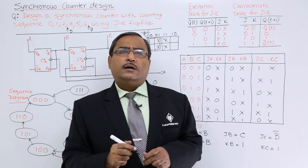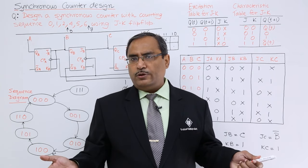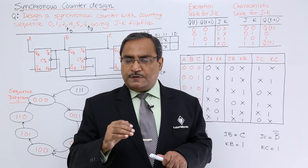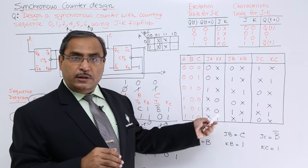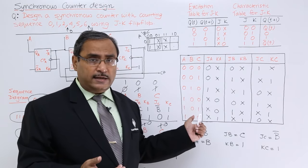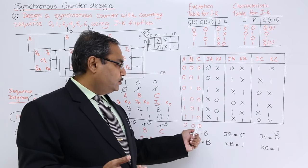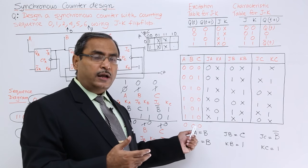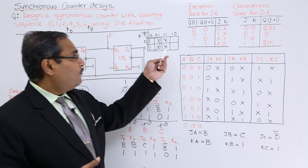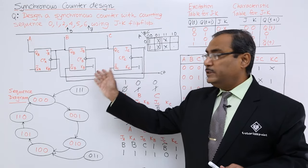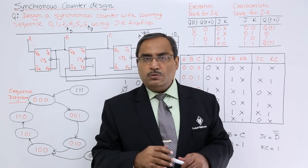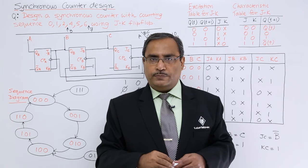The circuit design for a synchronous counter should no longer be a problem. The key steps are: construct the state table with the required sequence, fill in the J and K columns using the excitation table, derive Boolean expressions by inspection or Karnamap, build the circuit, and complete the sequence diagram including any missing states. Thanks for watching.